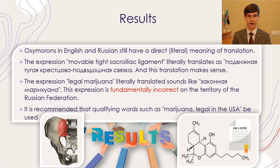The expression mobile-type sacroiliac ligament, which is shown in the picture on the left, lightly translates directly, and this translation makes sense. Anatomically, although the ligament is very tight, it still moves with an amplitude of 4 to 10 degrees in all three axes. This example illustrates that expressions containing an oxymoron in Russian and English have a similar interpretation.